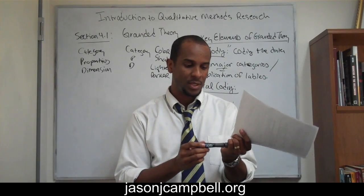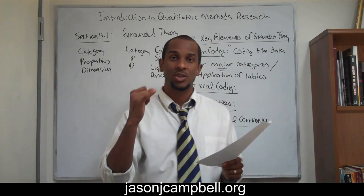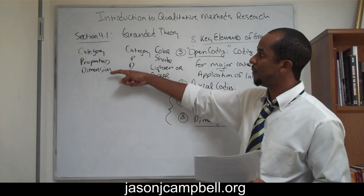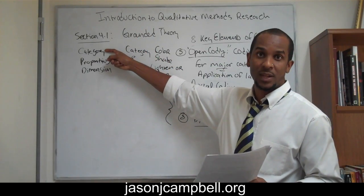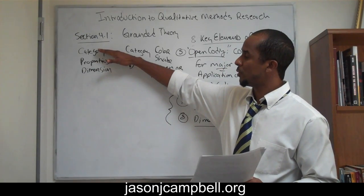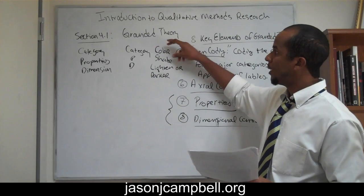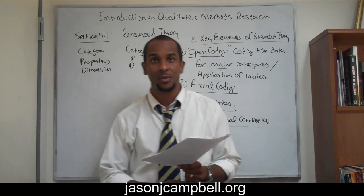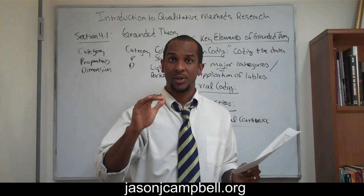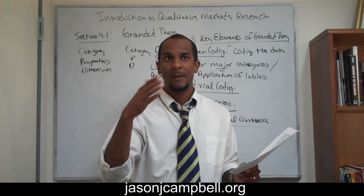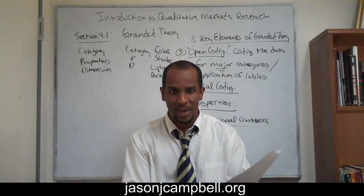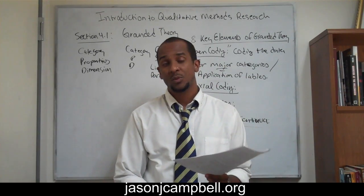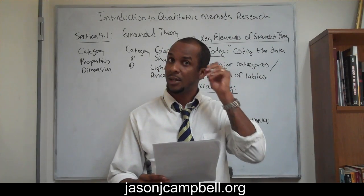In talking about grounded theory, it's important to recognize that the theory is grounded in the data — the data is used to generate the theory. We also have to recognize that dimension is an aspect of properties, and properties are an aspect of categories, so this goes from more general to more specific. Colors have shade and those shades have a spectrum. Domestic abuse as a general category has the property of violence, and that violence has a spectrum of mental or physical. You can make your tree more and more complex as you go further down, and this is what we use to substantiate and validate our research within grounded theory.